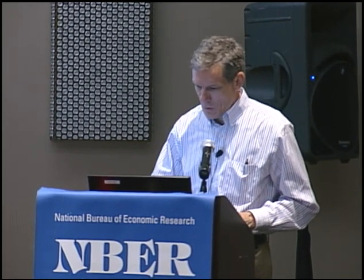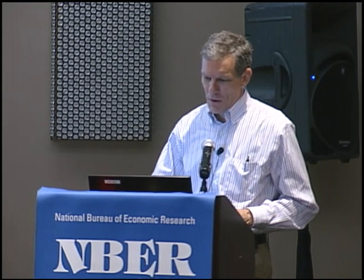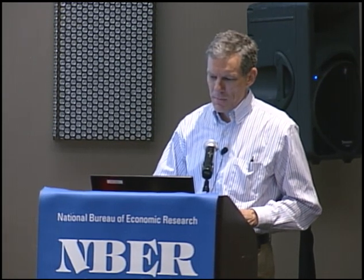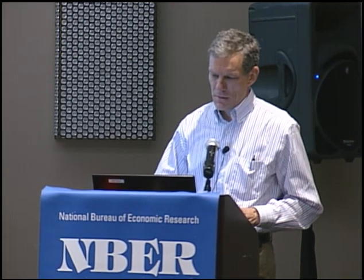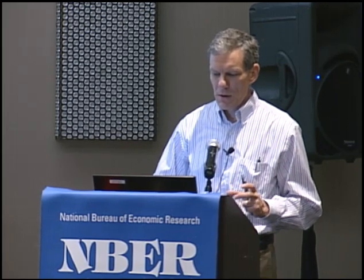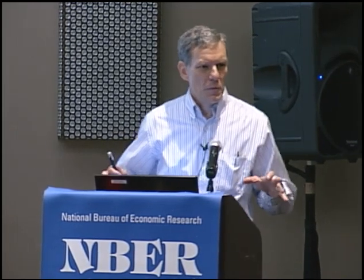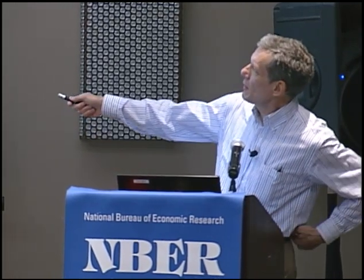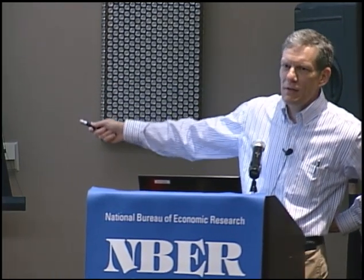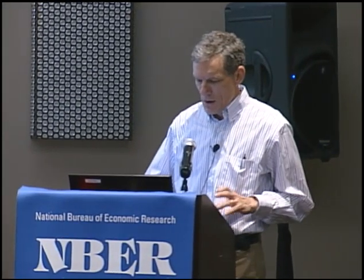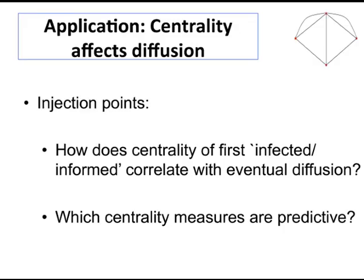I wanted to spend a little time on centrality and diffusion, and then we'll come back to diffusion more generally. We talked about different centrality measures. Daron talked about the Katz-Bonacich, which is a variation of the eigenvector centrality measure. One thing we can do is begin to see if there are real differences, or whether these things are helpful and predictive — seeing if they can inform us about a diffusion process.